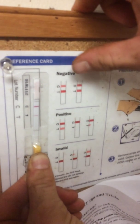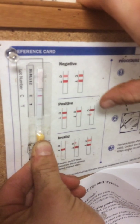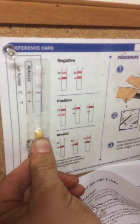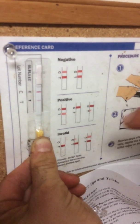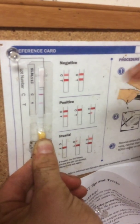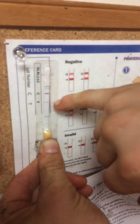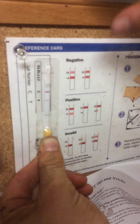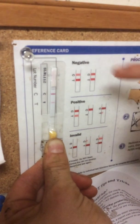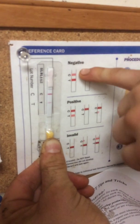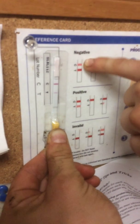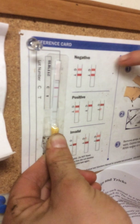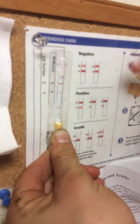Now we're looking at whether it's negative, positive, or invalid, and to do that we're looking at how dark these two lines are. For negative, the top line is lighter than the bottom line, or they're the same.